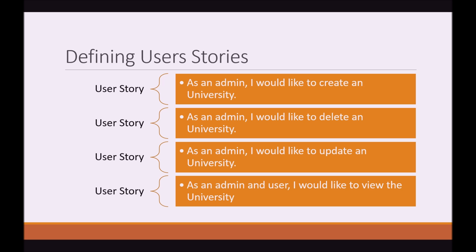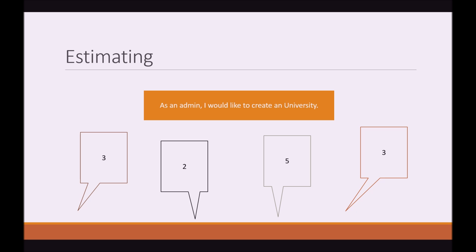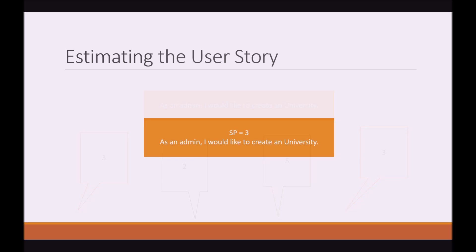Now the team needs to take each User Story and add an estimate to it. Estimating: the team takes a User Story and starts to estimate the amount of Story Points it is valued at. Each team member gets a chance to say what they feel it is. In this case, you can see the majority is three, so majority rules and this User Story will take Story Points equal to three.